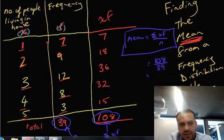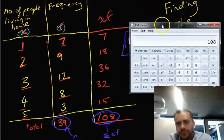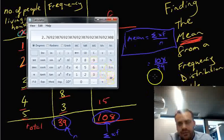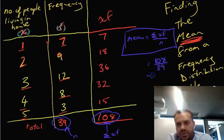Again, you're going to need to get your calculator out. 108 divided by 39. That gives us an answer of approximately 2.78.